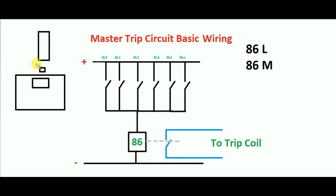This breaker has been tripped. Now the grid has a synchronizing. This is your power plant. If you want to generate the power of your alternator, this is your home load function. This is 86M — if there is a grid, this is 86M, and this is your generator.